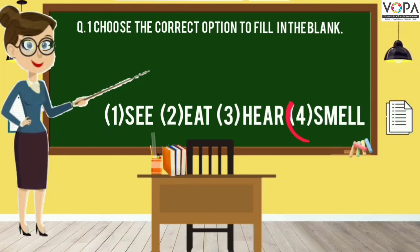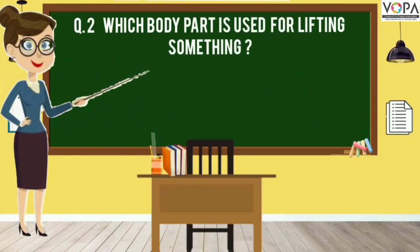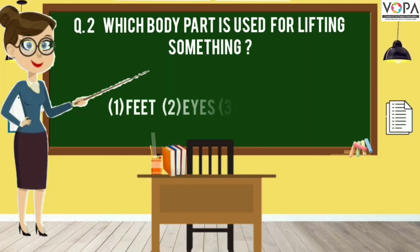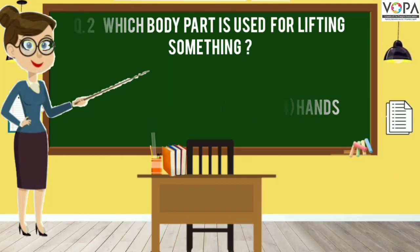Question number 2. Which body part is used for lifting something? Option 1: Feet. Option 2: Eyes. Option 3: Ears. And Option 4: Hands.